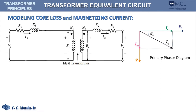Next, we model the core loss and the magnetizing current. That model has to satisfy this phasor diagram. The question is: where are we going to put the model? Should we put it in the primary or in the secondary? Take note that even without the load at the secondary, or even without the secondary winding, we'll still get a core loss and a magnetizing current.